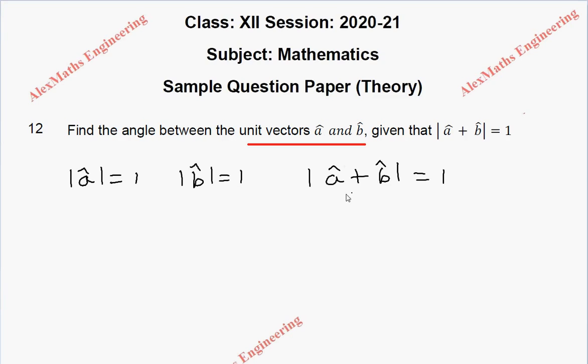So we are going to take this and square on both the sides. So mod a cap plus mod b cap equal to 1. We are squaring on both the sides. Square of this will give us mod a square plus 2 a cap dot b cap plus mod b square equal to 1.